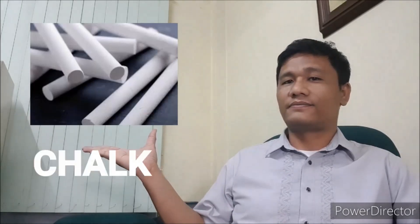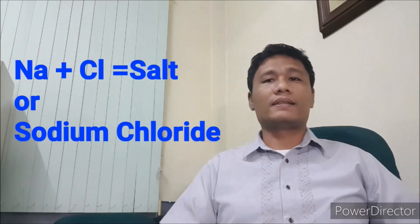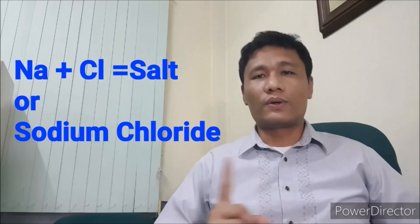When we say compounds, when you combine two or more elements like these shown here, those are examples of compounds. So compounds are a combination of two or more elements.